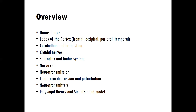Then we'll explore neurotransmitters specifically, such as serotonin, dopamine, and norepinephrine — those kinds of important neurotransmitters that we need to know about. We'll also learn about polyvagal theory and Dan Siegel's hand model, which are both important applied theories of neuroscience that are based on research evidence, but are not pure research-based theories. They're more conceptual in scope.